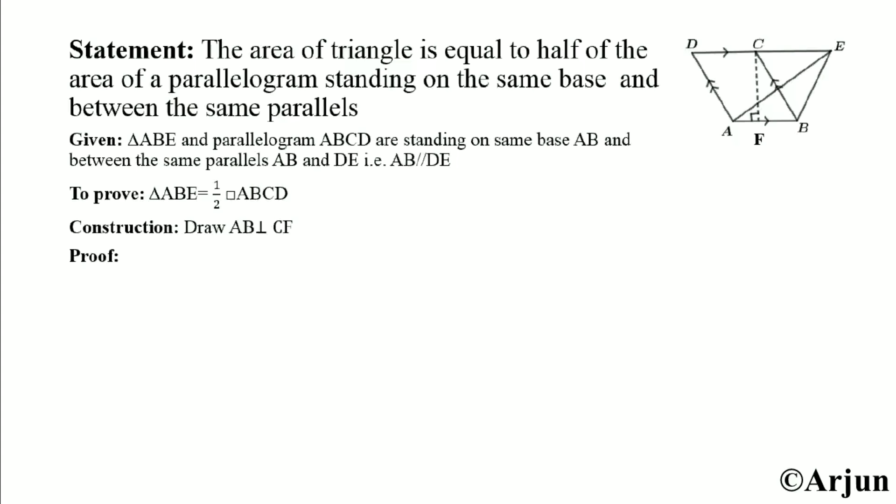For this we construct a perpendicular CF to AB. This is our construction — line AB is perpendicular to CF, and this dotted line CF is our construction.